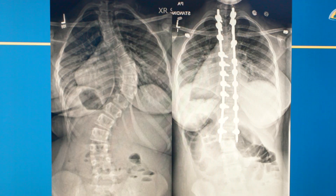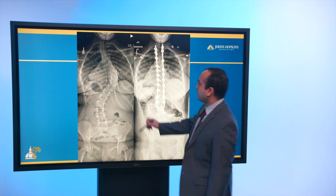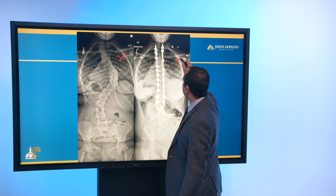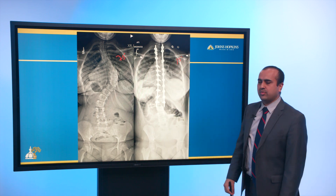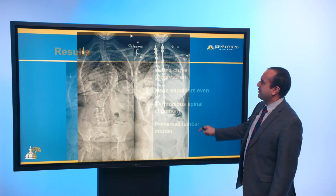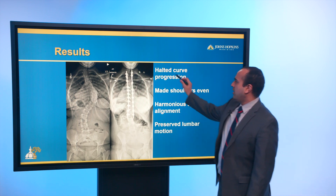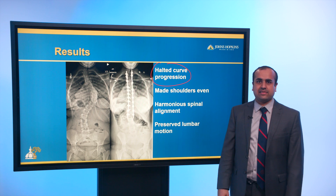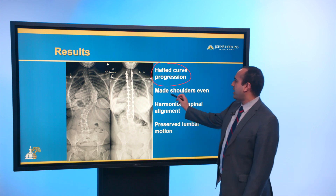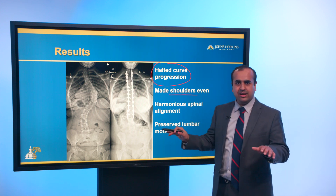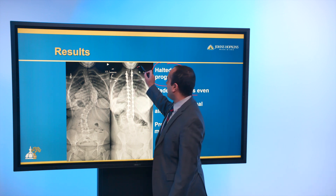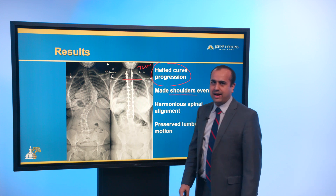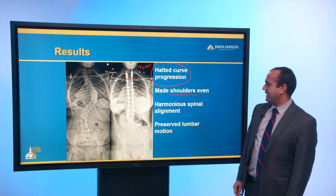These were our results. As you can see, we were able to go down from about a 75-degree main thoracic curve to about a 15-degree overall curvature — a pretty good result. We were able to achieve the goals of surgery: number one being halting curve progression, which we successfully did. As a byproduct of our planning, we were able to make the shoulders even. Going to T2 as our UIV really helped with that, and the shoulders are even as judged by the T1 tilt as well as the clavicle angle.